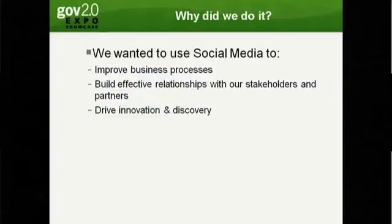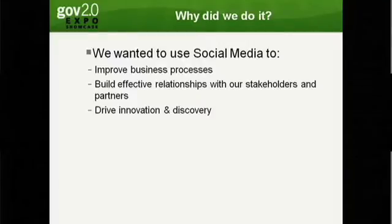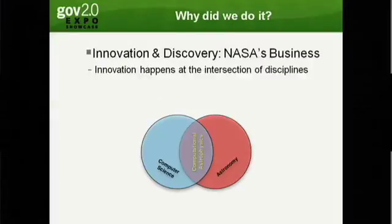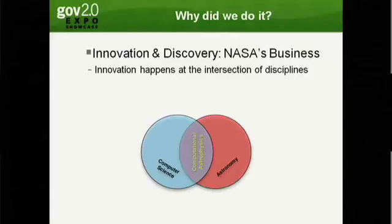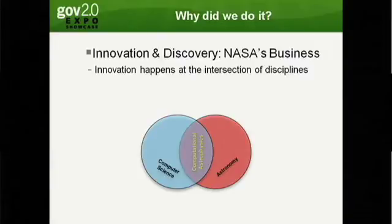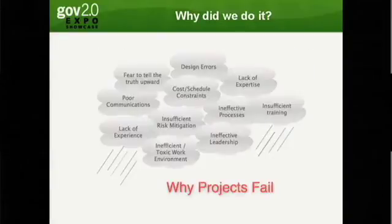What was important to us in building this wasn't just to go and have fun and talk to people, but it was really to meet our web strategy — improve the business, build relationships, and drive innovation and discovery, because that's what NASA's business is. When you put different fields together, what this graphic is supposed to show you is that when you put astronomy and computer science together, you actually get computational astrophysics, and you develop a lot more interesting things when you get people from diverse fields to talk to each other.